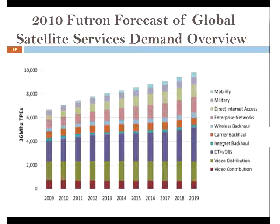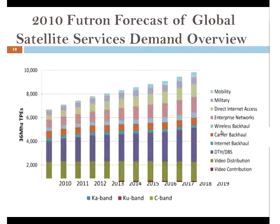The only way to increase capacity is through technology — specifically, going higher in frequency. At C-band (6 GHz), a satellite has about 500 MHz of bandwidth. At Ka-band (30 GHz), it could be up to 3,500 MHz — seven times more bandwidth. So while the number of orbital slots is fixed, going to higher frequency bands multiplies available bandwidth by a factor of five to seven.